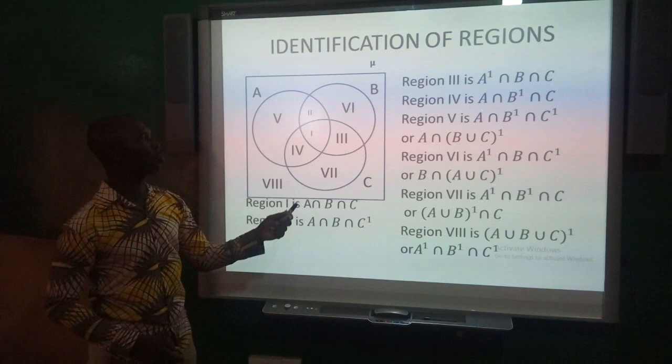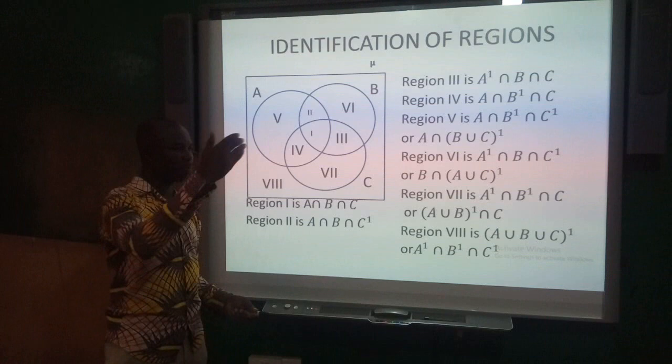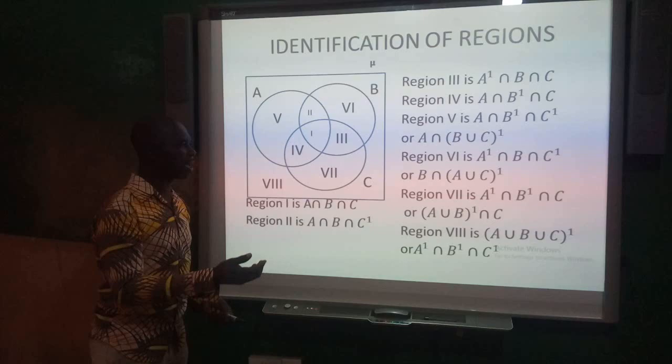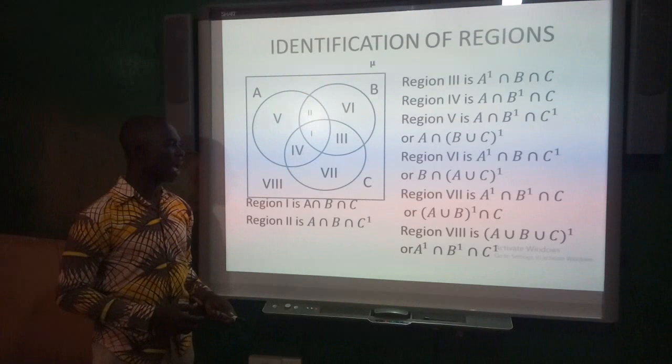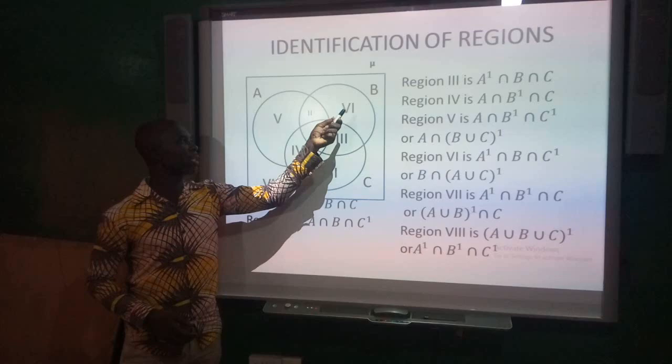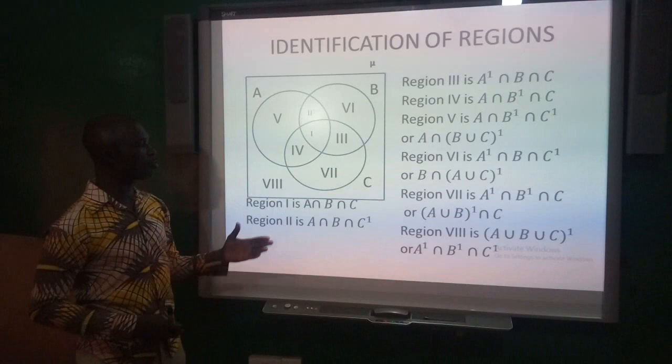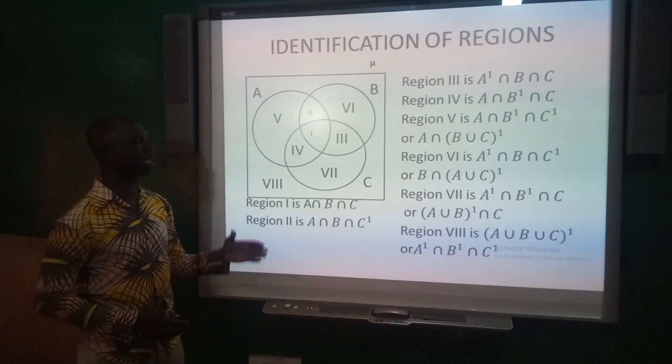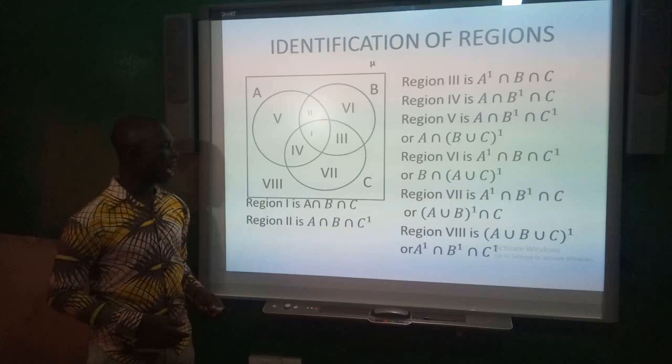Region VI is referred to as B only. B only gives you A complement intersection B intersection C complement. This can also be written as B intersection bracket A union C complement. Region VII is C only.